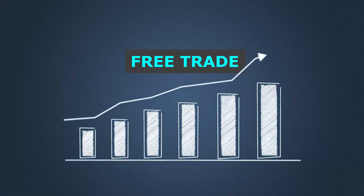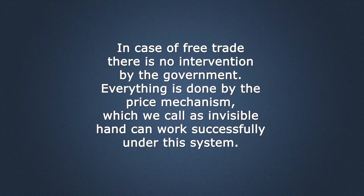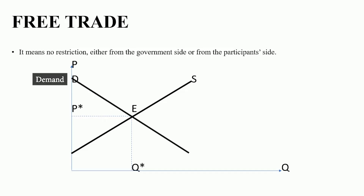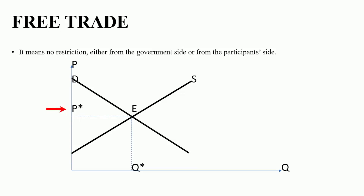Now comes the next one — Free Trade. In case of Free Trade, there is no intervention by the government; everything is done by the price mechanism, which we call the Invisible Hand. In our diagram, DD is the demand curve and SS is the supply curve — the demand curve is downward sloping and the supply curve is upward rising. Here E is the equilibrium point where the demand and supply curves intersect. Corresponding to equilibrium point E, P-star is the equilibrium price and Q-star is the equilibrium quantity. This is a simple demand-supply diagram where price mechanism is working to clear the market.